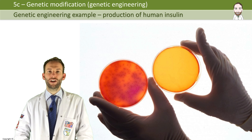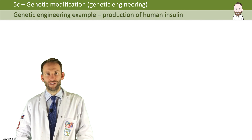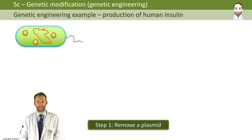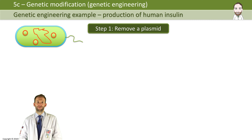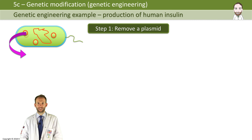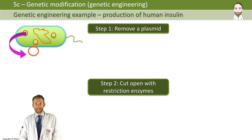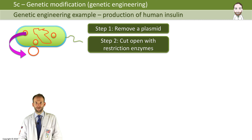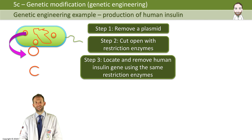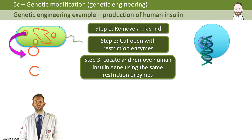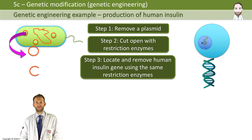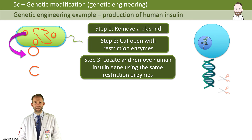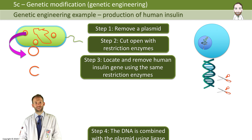To go through that process in detail: step one, remove a plasmid from a bacteria. Step two, cut it open with some restriction enzymes. Step three, locate and remove the human insulin gene using those same restriction enzymes — cut out the human insulin gene from someone's DNA using those restriction enzymes.